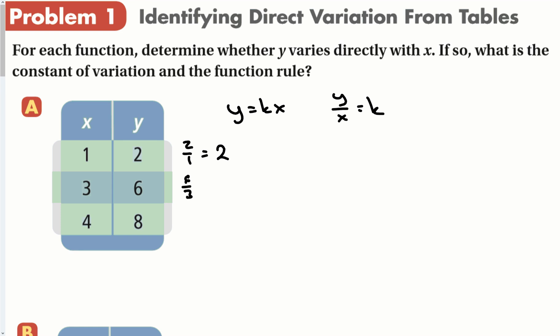And it should be constant, which it is. So that means in all three of these, k equals 2. That means this first example is direct variation.